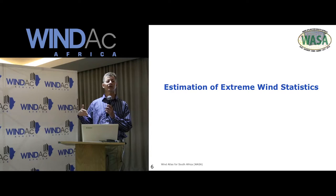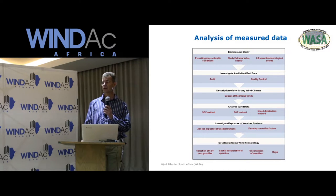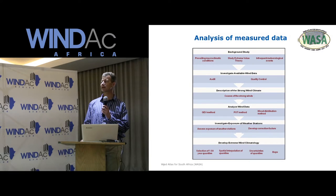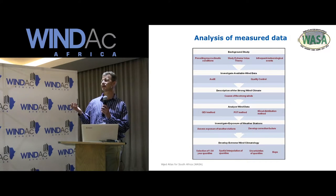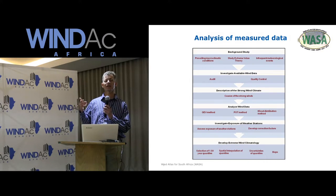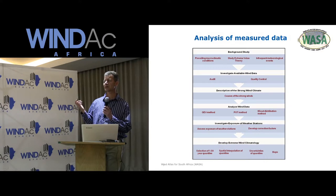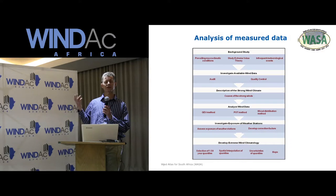Let me go through how we did the estimation of the extreme wind statistics. First, we did the analysis of the measured data, beginning with a background study. We looked at prevailing macro-climatic conditions, studied extreme values and all the statistical methods. We also looked at infrequent meteorological events, for example things like tornadoes and tropical cyclones.